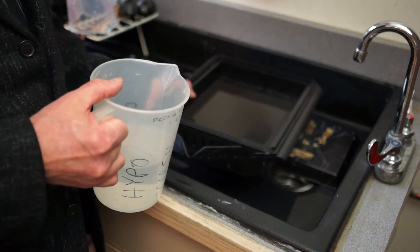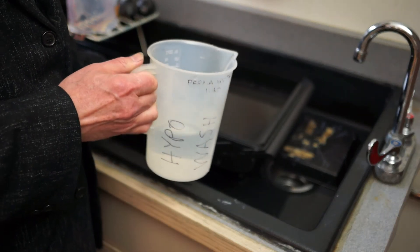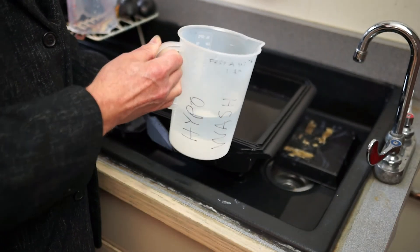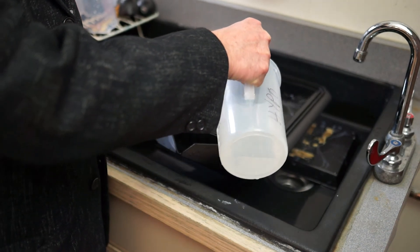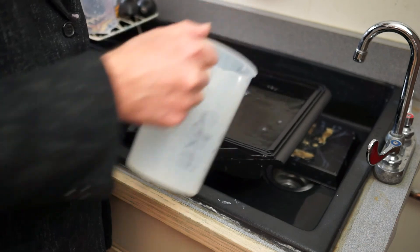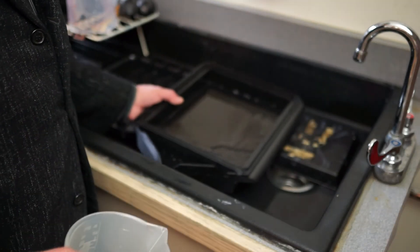After the one-minute rinse, we'll do the hypo wash. And again, we just need 500 milliliters, and we'll do it right in the open tray with the lid off. And that'll need constant agitation for one minute.